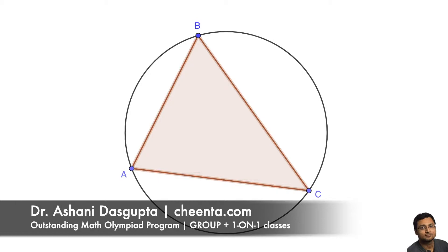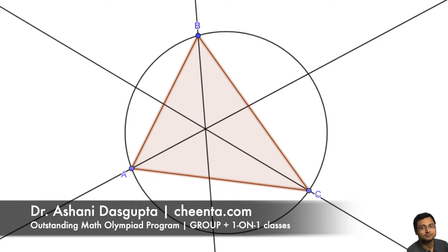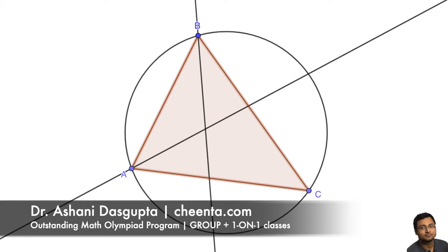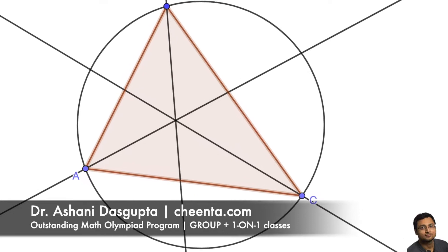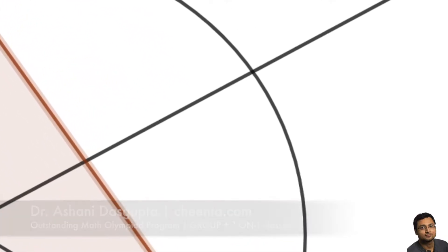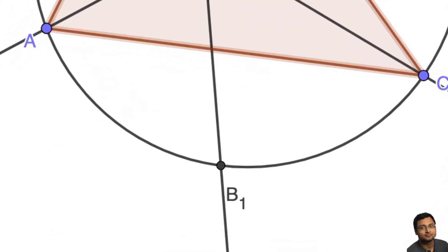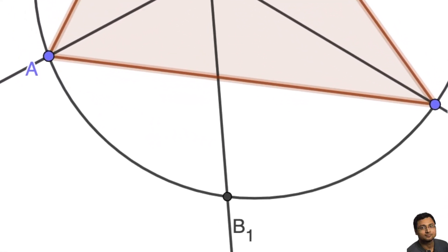We will draw the angle bisector of angle A, angle B, and angle C. Suppose the angle bisectors meet the circle at the points A1, B1, and C1.